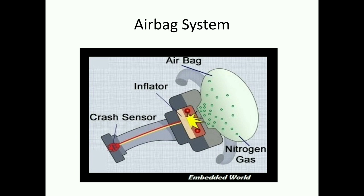Once the ECU is done, it sends the signal to the airbag control system. Here is a brief pictorial representation: the crash sensor sends input to the ECU. The ECU then sends the command to the inflator to ignite — there is a chemical process behind this. Once the particular chemical reaction starts, it produces nitrogen gas. The nitrogen gas blows the nylon bag — that's the airbag — it opens up and saves the passenger's or driver's life.